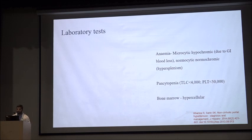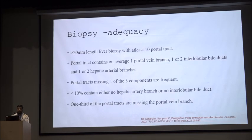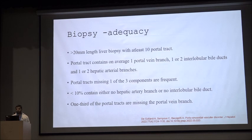In lab work, there is anemia — either microcytic hypochromic due to GI blood loss or normocytic normochromic due to hypersplenism. Pancytopenia is present although bone marrow is hypercellular. Biochemical tests show subtle, more-or-less normal changes. Biopsy is required and should be more than 20 mm in length with at least 10 portal tracts. Normally a portal tract has one portal vein branch, one to two bile ducts, and one to two hepatic arterial branches; having only two or three portal tracts would lead to a spurious diagnosis.